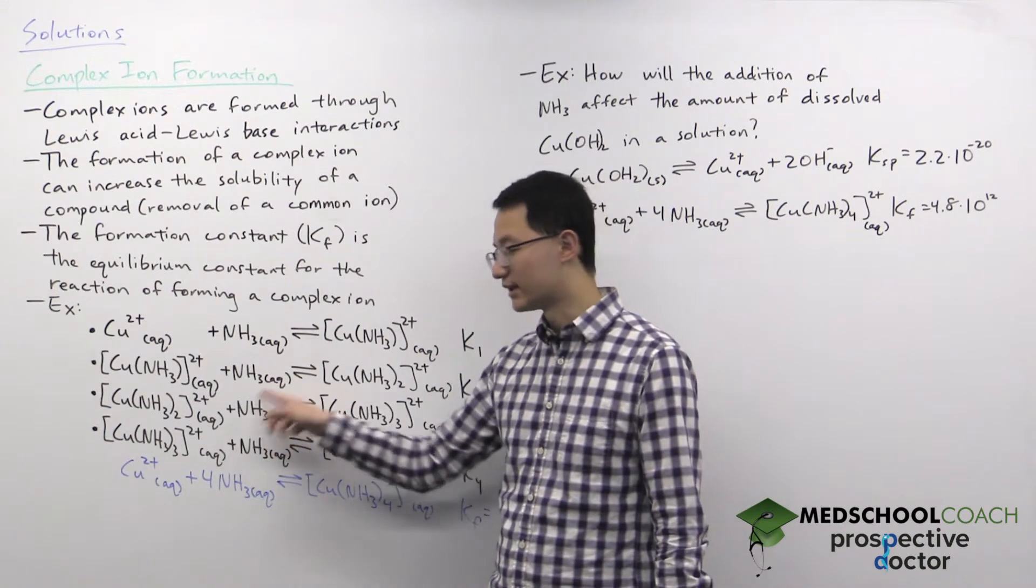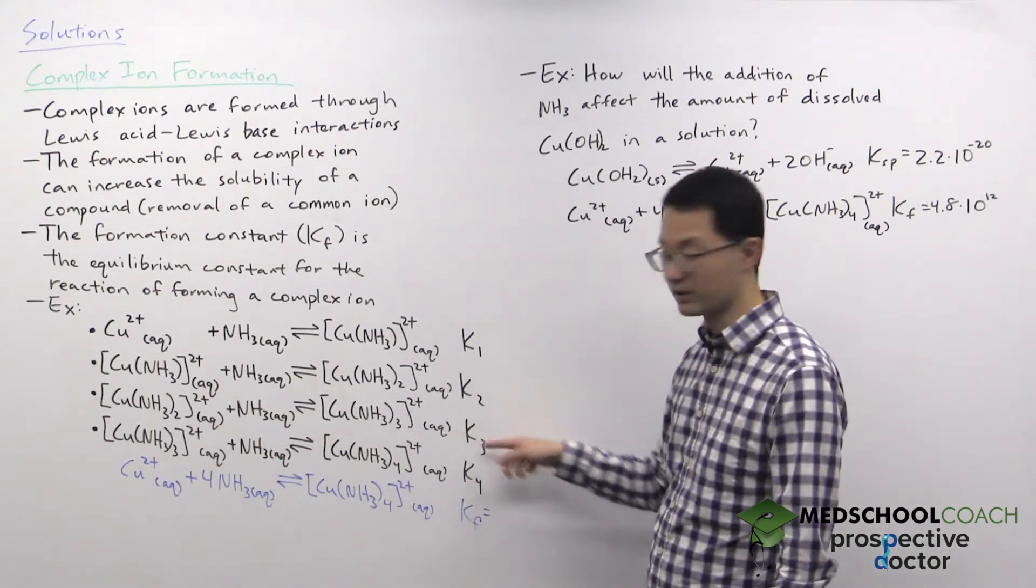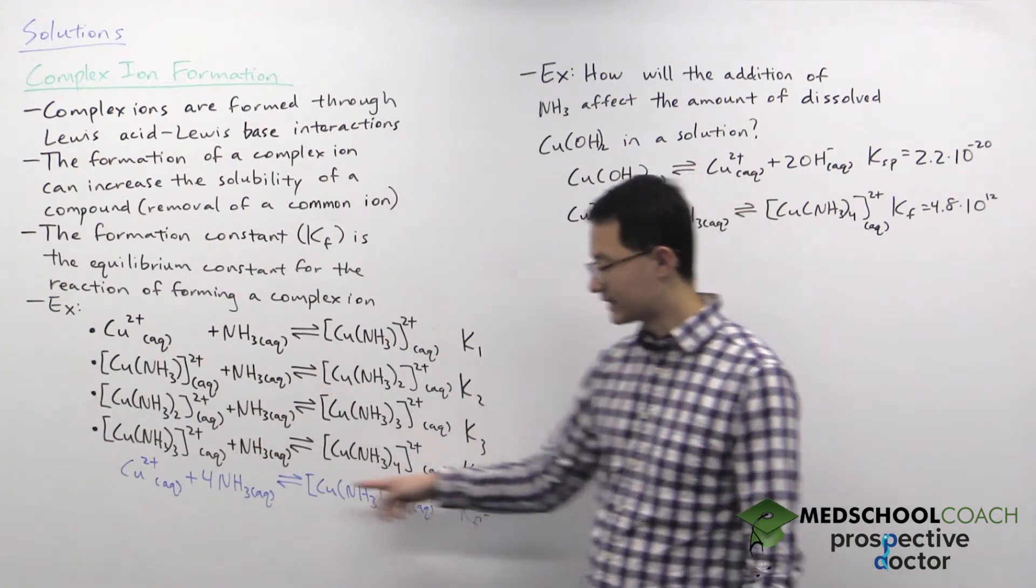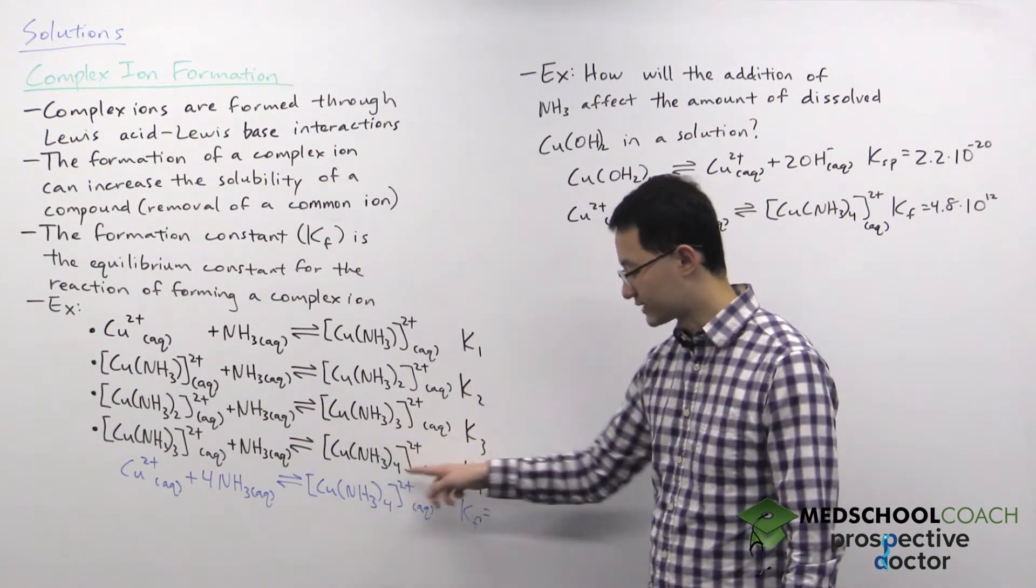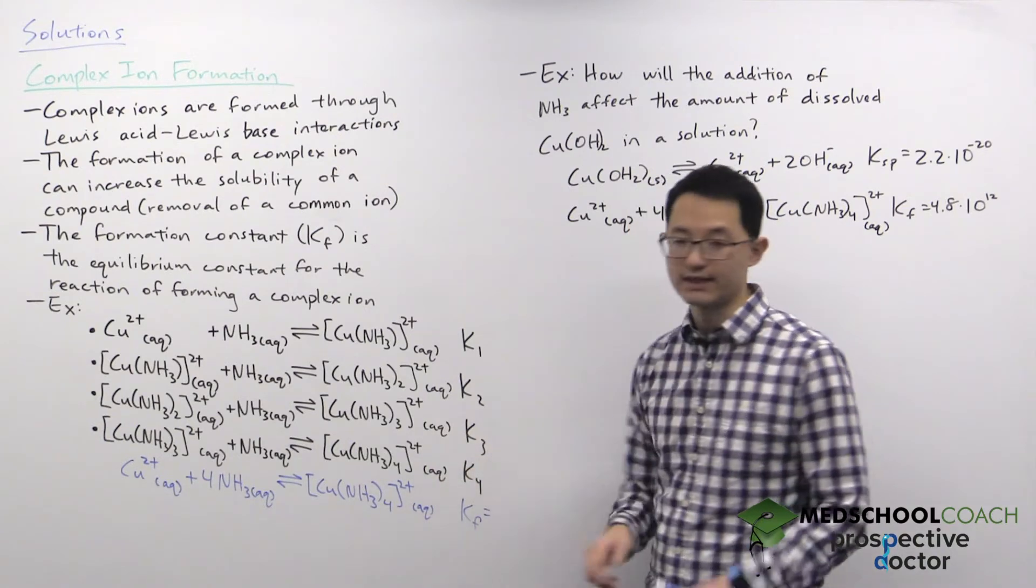This is the third step binding a third ammonia molecule, equilibrium constant K3, and the last step binding the fourth ammonia molecule to form the complex ion with equilibrium constant K4.